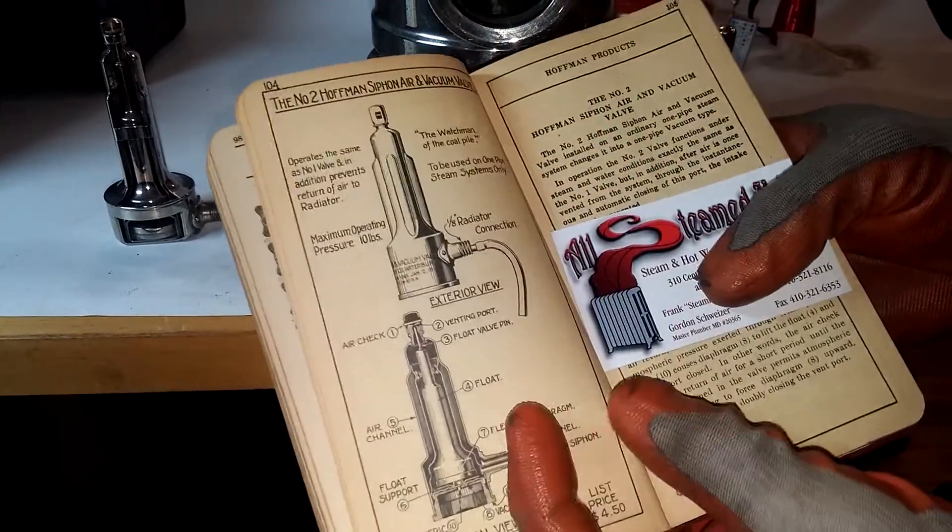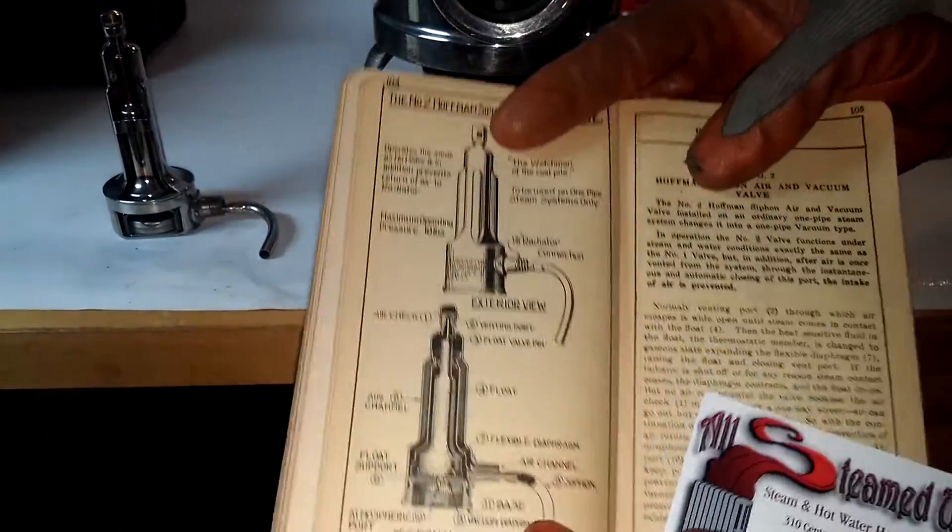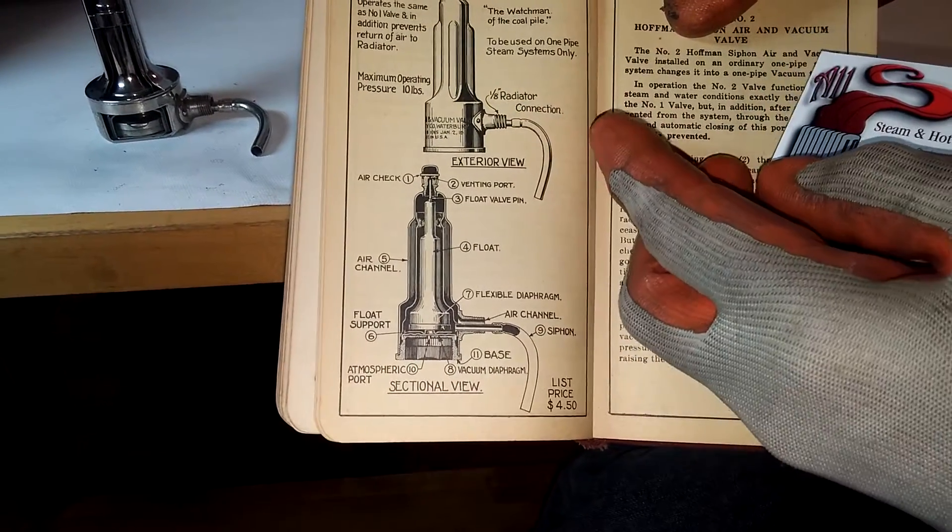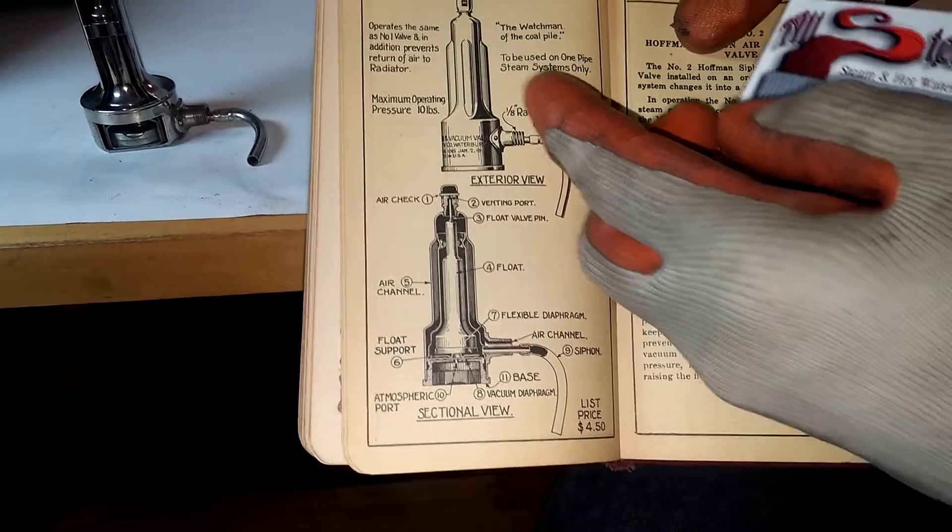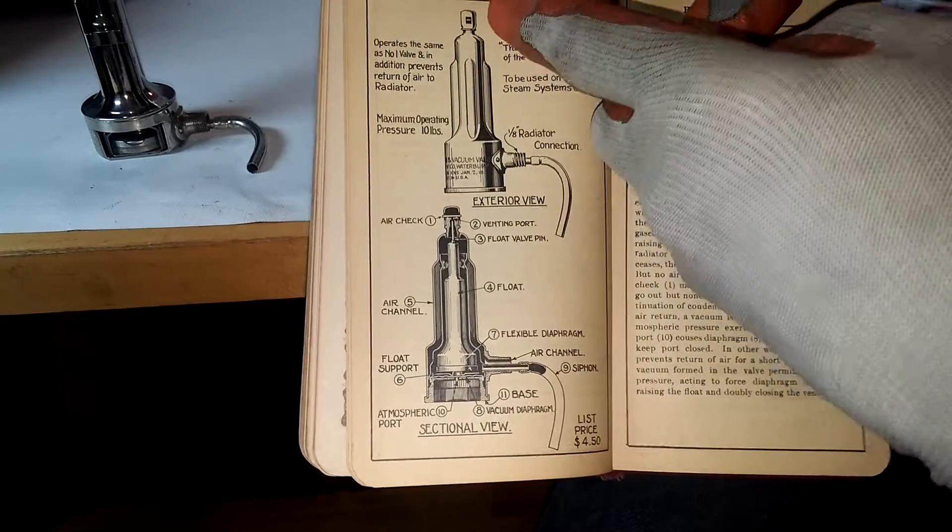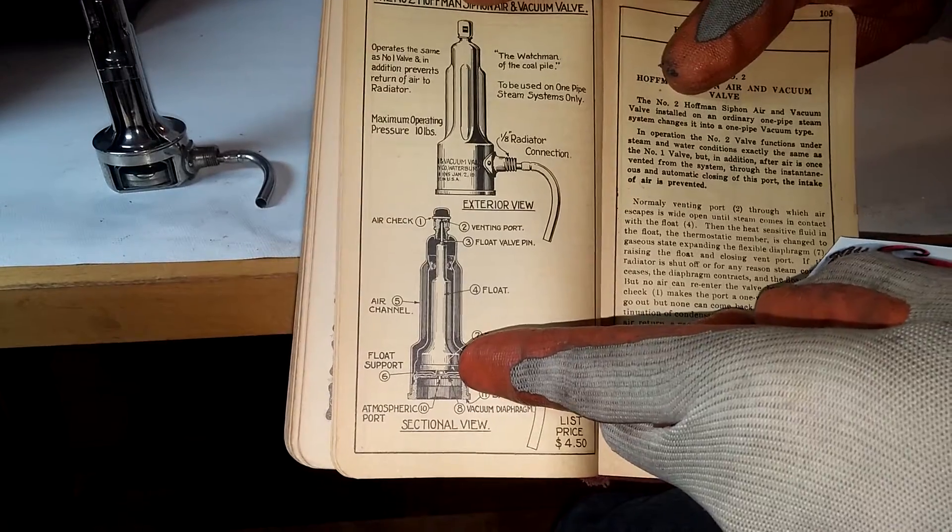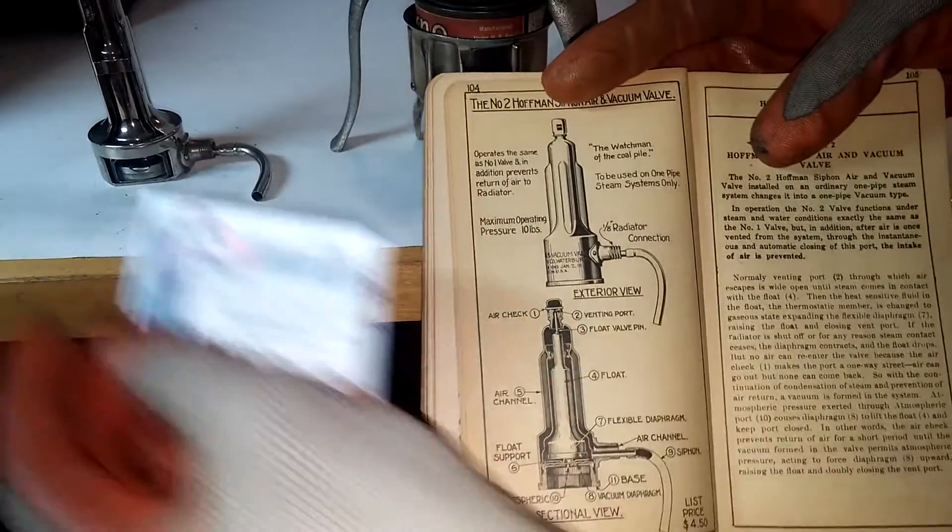And this is the number two siphon air valve and vacuum valve, showing the cutaway. It was used for single pipe steam only, and it was the same as the number one, except that it had two check valves, a top and an inner check valve, as shown here.